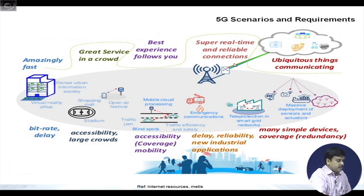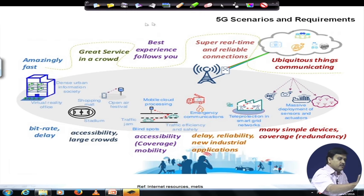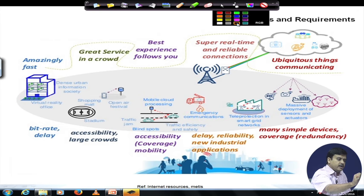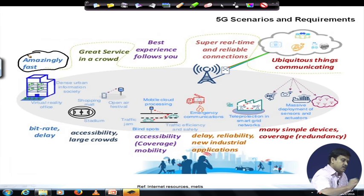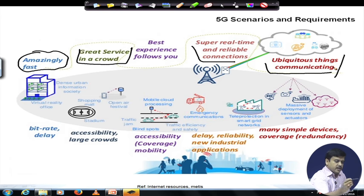This particular slide, sourced from internet resources including Mattis and Ericsson, shows the 5G scenarios and requirements. 5G is distinctly different from 4G in that there is a wide variety of requirements, which can be summarized as: amazingly fast, great service in crowds, best experience follows you, super real-time and reliable connection, and ubiquitous communication. Ubiquitous communication means the Internet of Things and machine-to-machine communications where millions of devices would be connected.